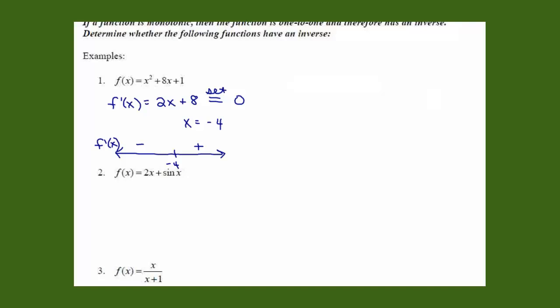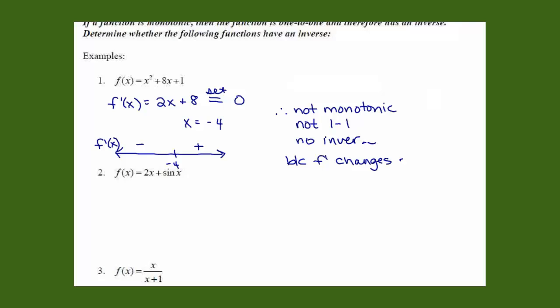Since f′ changes sign, the function is not monotonic, not one-to-one, and there is no inverse function on (−∞, ∞). However, if they wanted to restrict the domain — for example, on the interval from −4 to infinity — then yes, the function would have an inverse, because the derivative would be positive for all of those values. But on (−∞, ∞), no, there is not an inverse function.